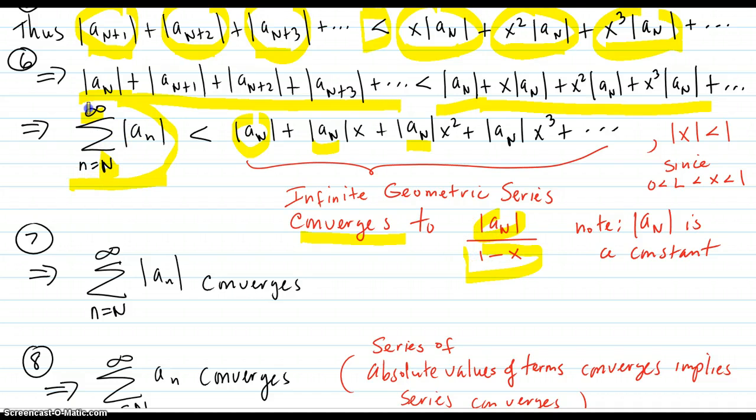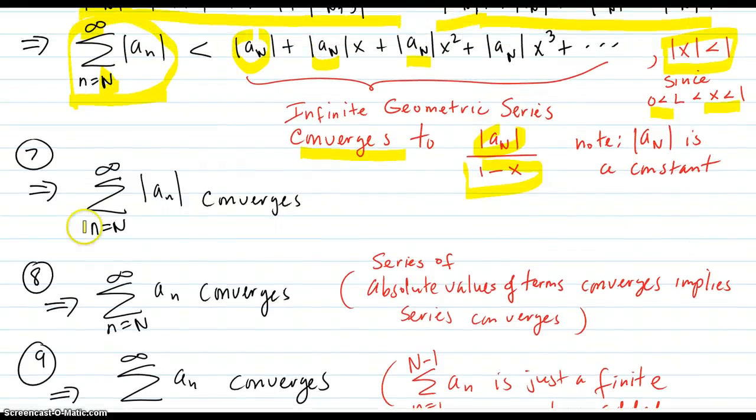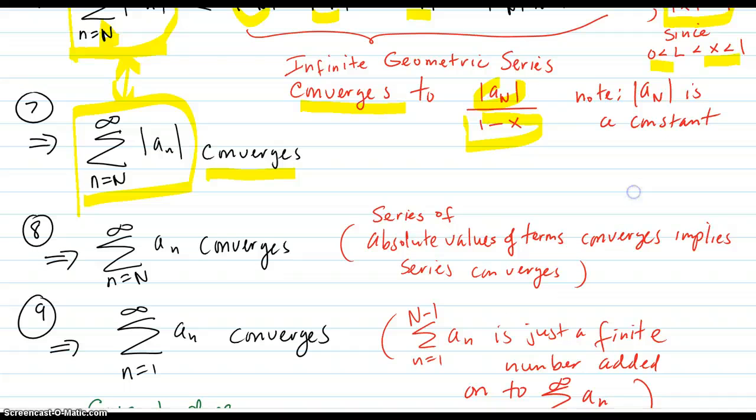So this series here is less than a convergent series. Oh yeah, and one more thing. That geometric series does converge to this because the absolute value of x is less than 1. Because remember, x was less than 1 and greater than 0. So this is definitely true. So that means that this series here, which is that one, same thing, converges because it's less than a series that converges. That means by a previous theorem that we proved, that if the series of the absolute values of the terms converges, then so did the original series. So that means this original series converges.